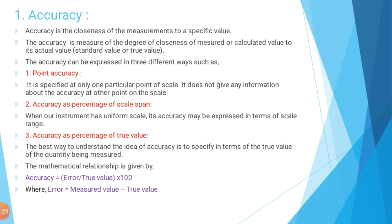The third way is accuracy as a percentage of true value. The best way to express accuracy is in terms of the true value of the quantity being measured. Mathematically, accuracy equals error divided by true value, multiplied by 100. The error is the difference between the measured value and the true value, that is: error equals measured value minus true value.